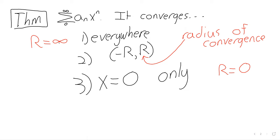In practice, the power series we're going to look at are mostly going to converge everywhere. But that has some implications — suppose you're looking at a function that isn't defined at zero and you want to approximate it with a power series. Something's weird then, because the power series is always defined at zero.